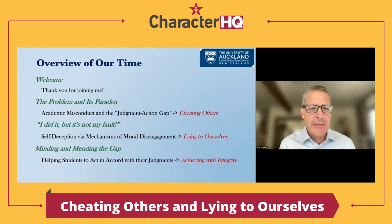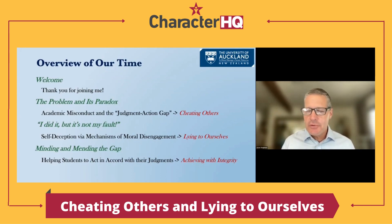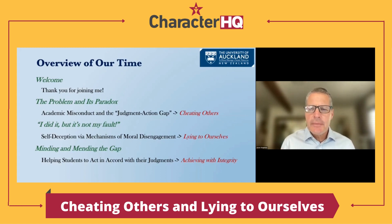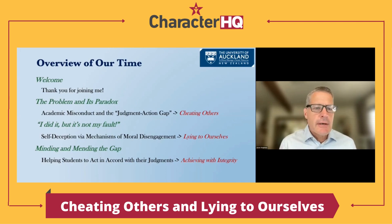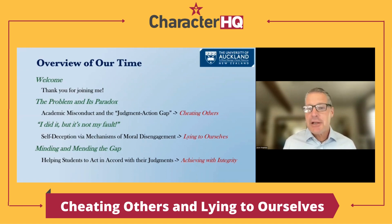I want to begin by talking about the problem of academic misconduct itself and this paradox known as the judgment-action gap — students doing things despite believing that they're wrong — and how this amounts to cheating others. Then I'll pivot to talking about self-deception: how we deceive ourselves using what's known as mechanisms of moral disengagement, or more generally, rationalizations.